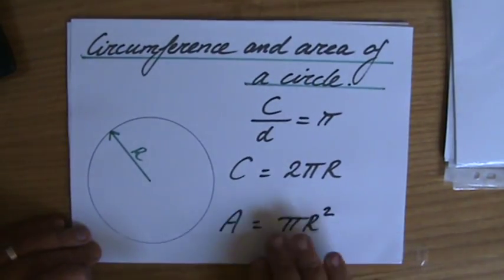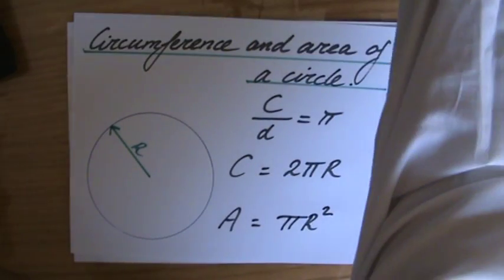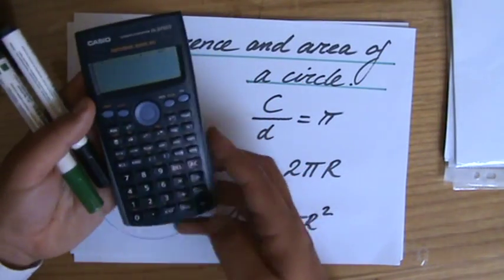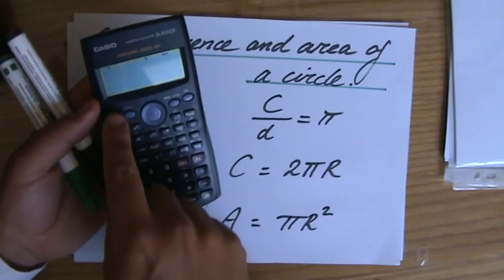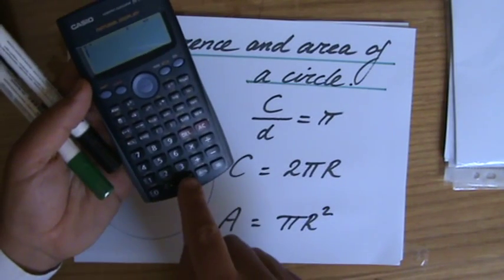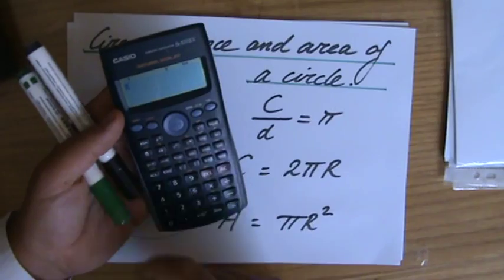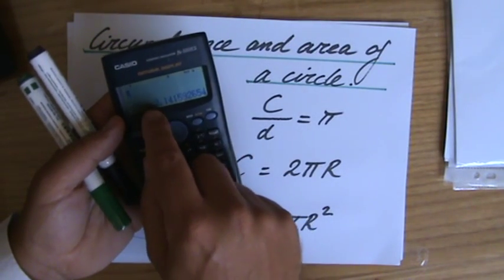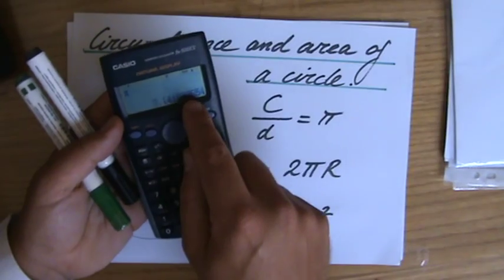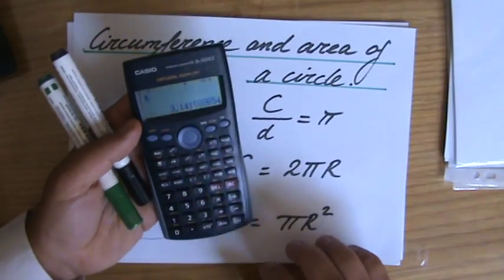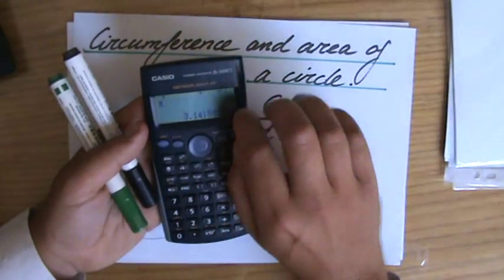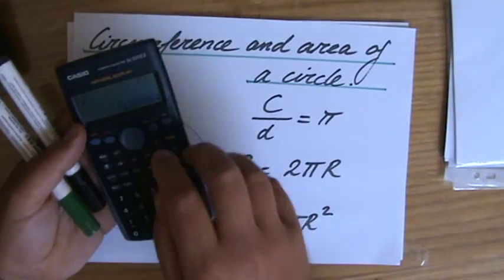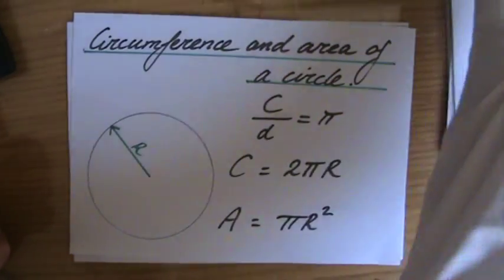And again, pi is a number, 3.1415. You can check your calculator if you want to know. If you put it on, in my particular case, it is shift, and then the standard form button, it gives me pi. And if I go to those decimals, it gives me 3.141592654. But we say pi, because these decimals, they will continue. Hundreds, thousands of decimals. But we just use pi.